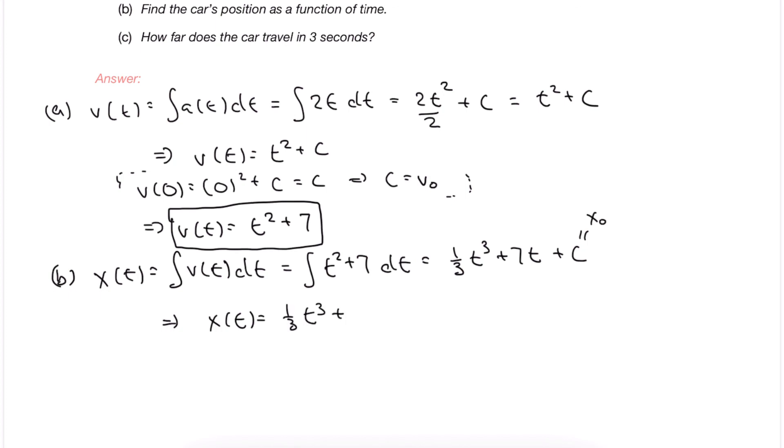Once we substitute that in, we get a formula for our position, knowing that the initial position is at the origin and is 0. We can finally answer the question that was being asked: how far does the car travel in 3 seconds? We do that by substituting the value 3 into our new position formula. We simplify and we get our answer here.